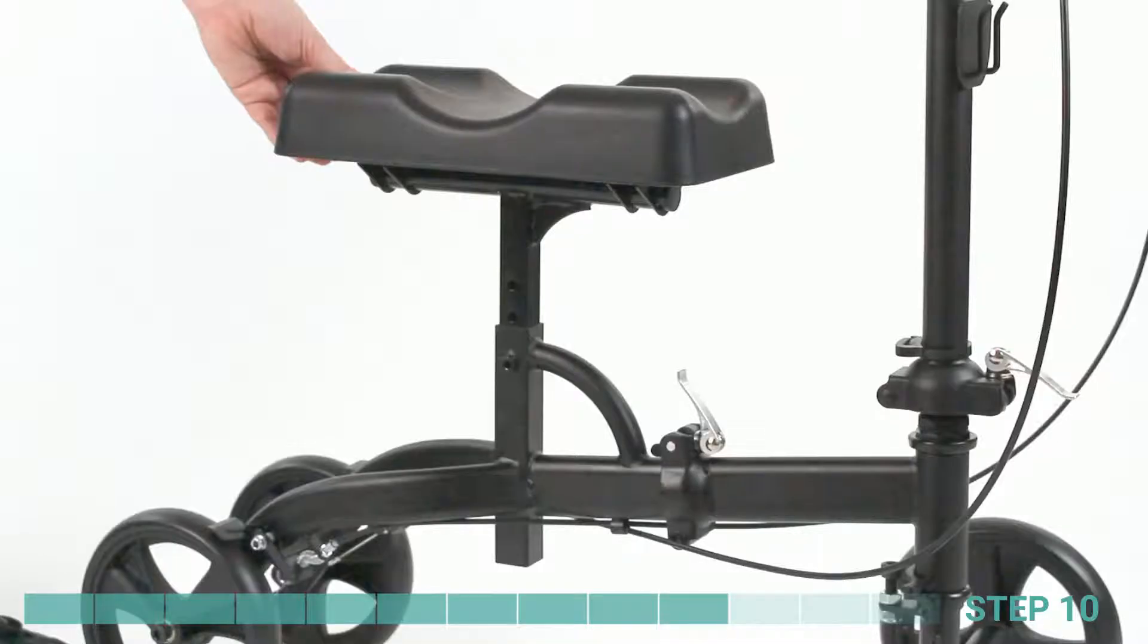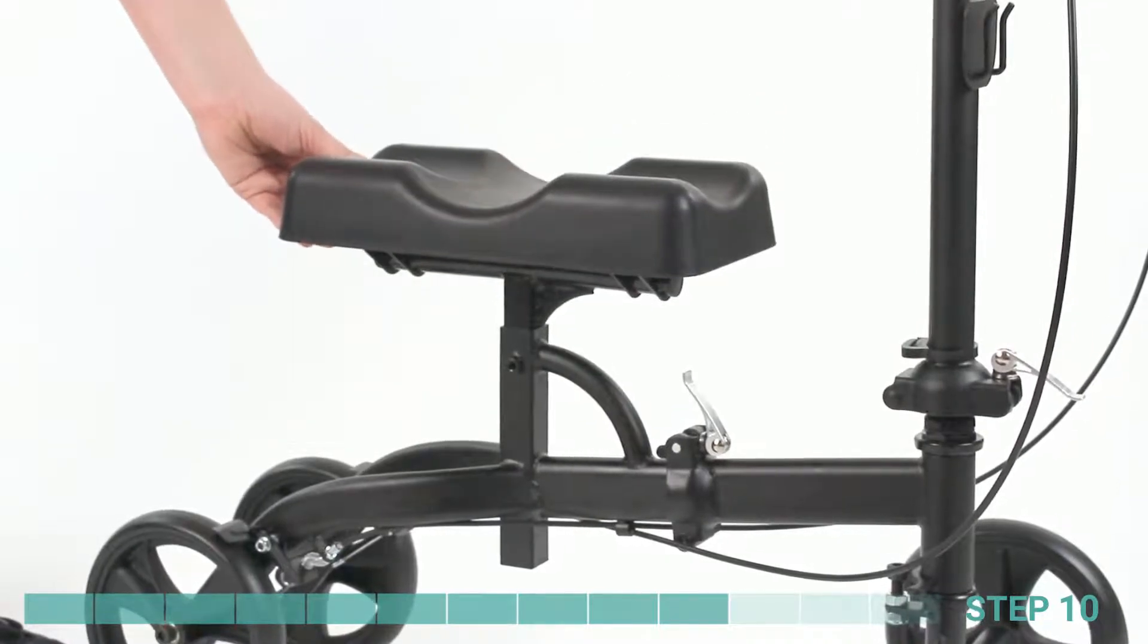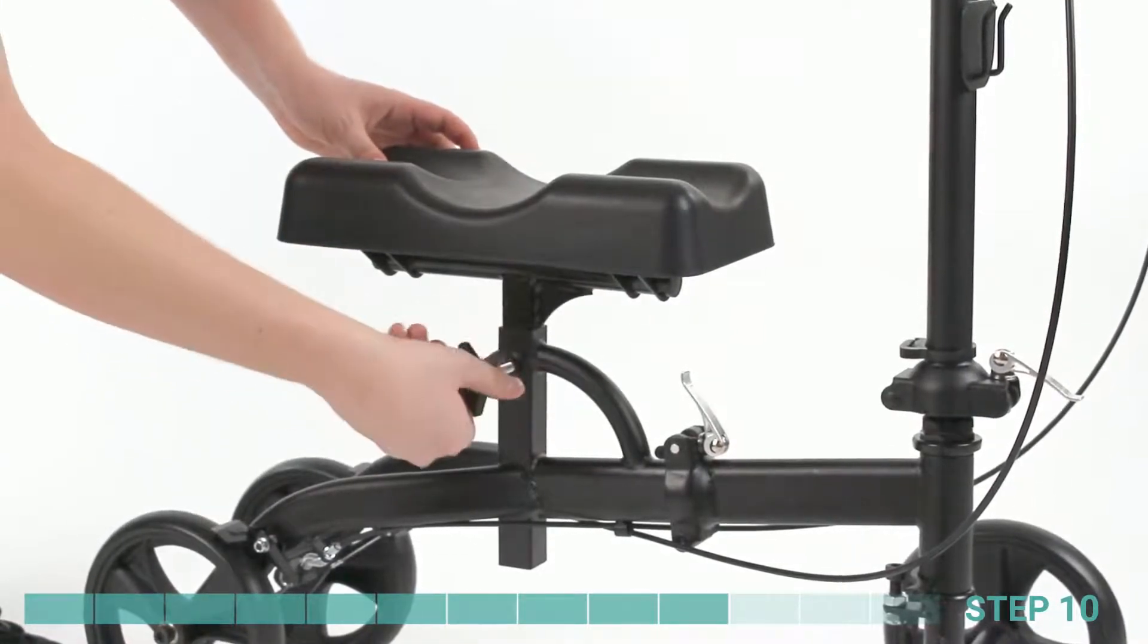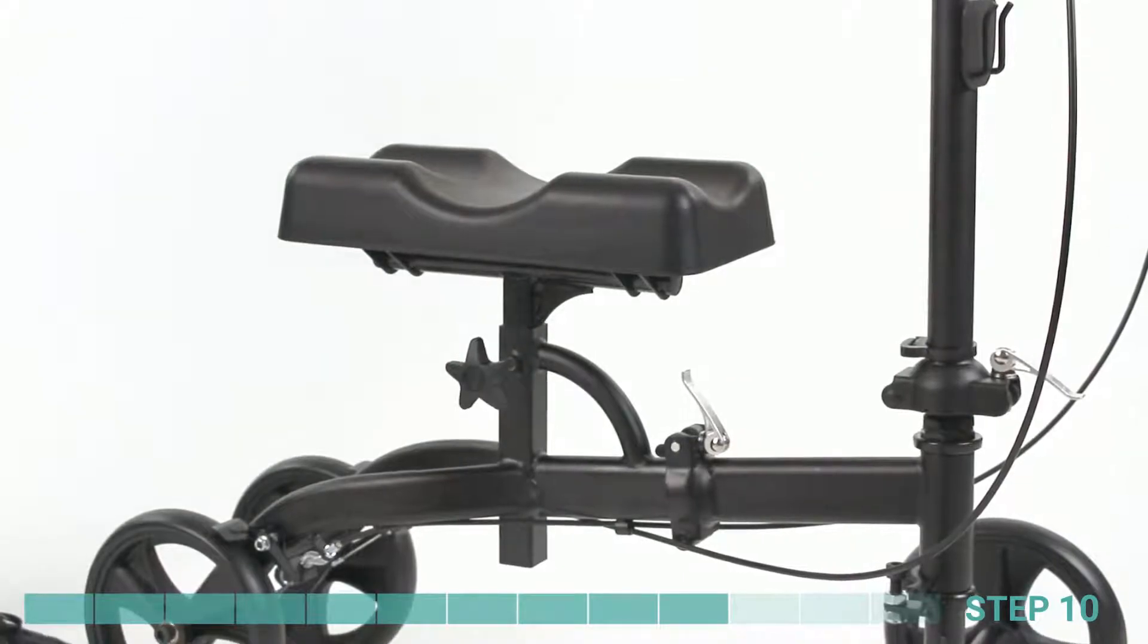Step 10. Adjust the knee pad to your desired height, lining up the hole on the knee pad pole with the hole on the base. Insert the adjustment knob back into the hole at the top of the base and tighten.